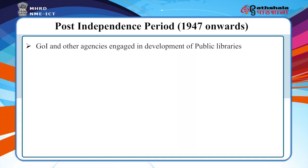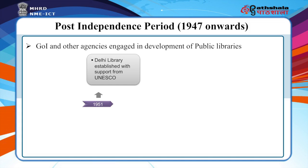In the post-independence era, the Government of India and other agencies engaged in the development of public libraries in India, establishing a number of libraries in rural and urban areas. The Delhi Public Library was established with the help of UNESCO in 1951.